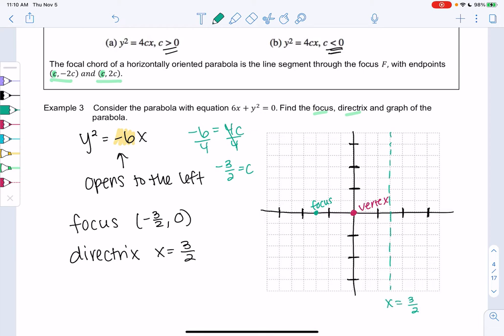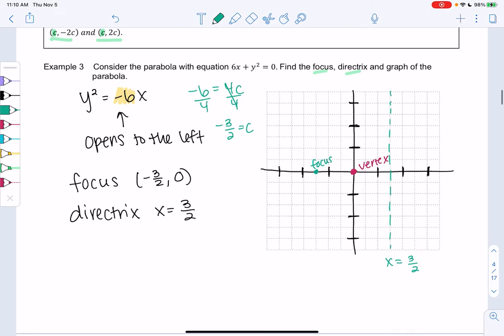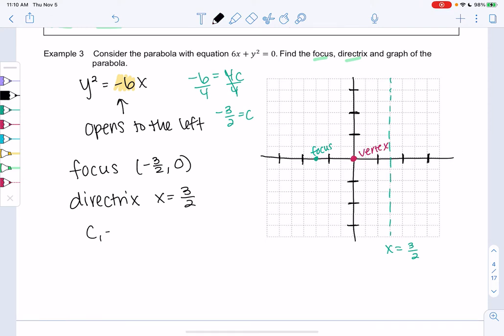And then let's just find two points on the graph so we can figure out maybe how open or closed this parabola is. So that'll be those c points.